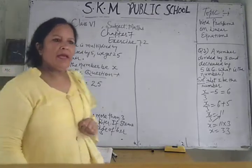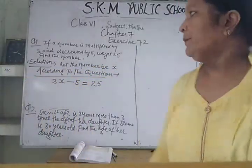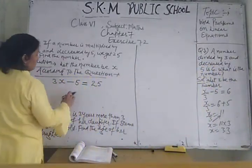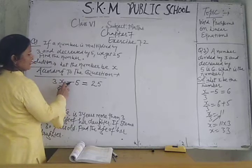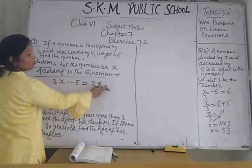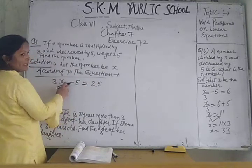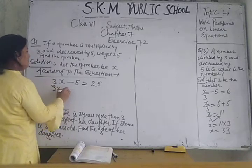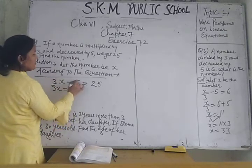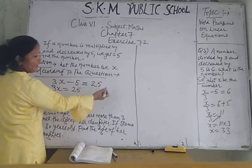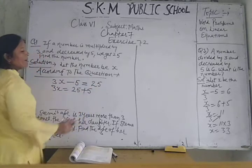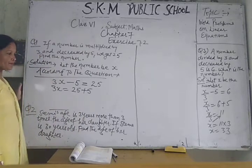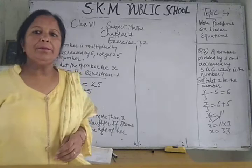Now you can solve this equation by any method. I am using the transposition method — very simple and time saving. This minus 5 can be transposed to the right-hand side; naturally the sign will change. This minus 5 will become plus 5 on the right-hand side.